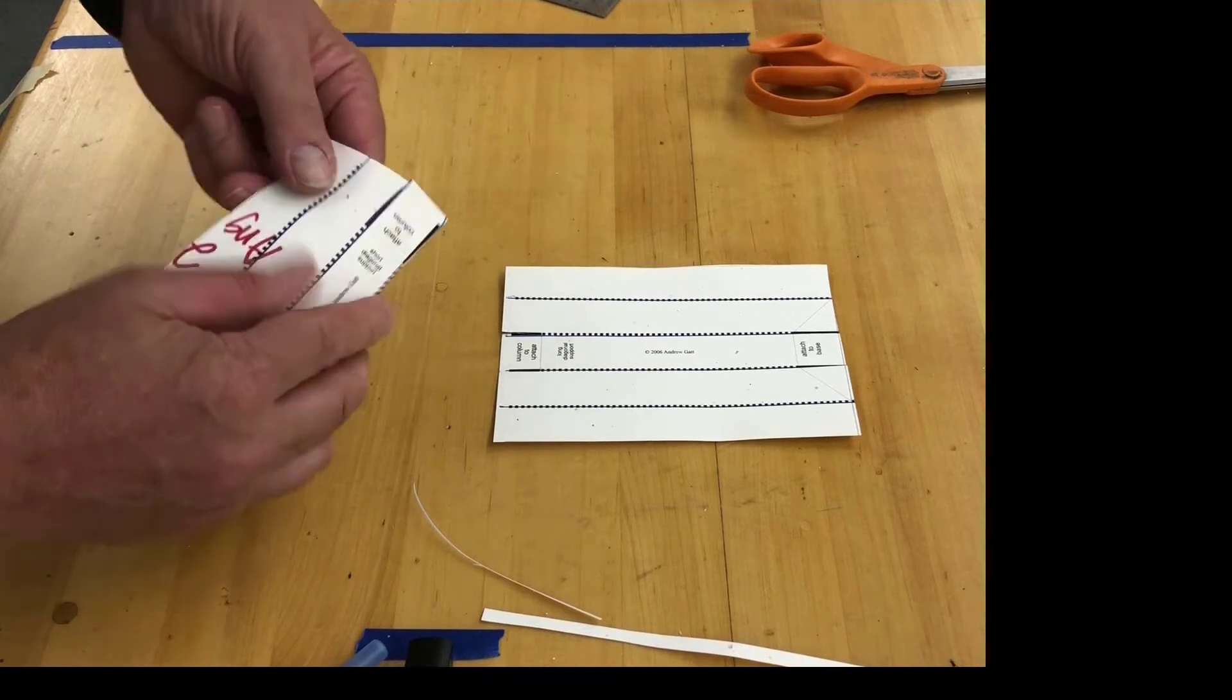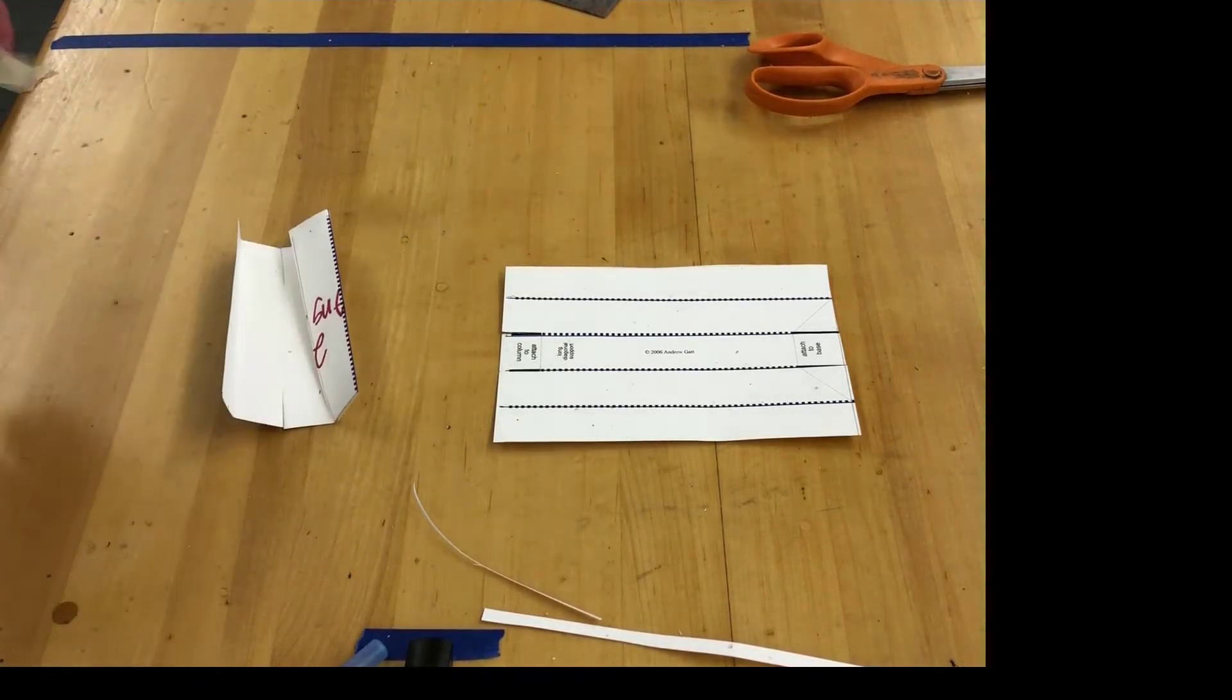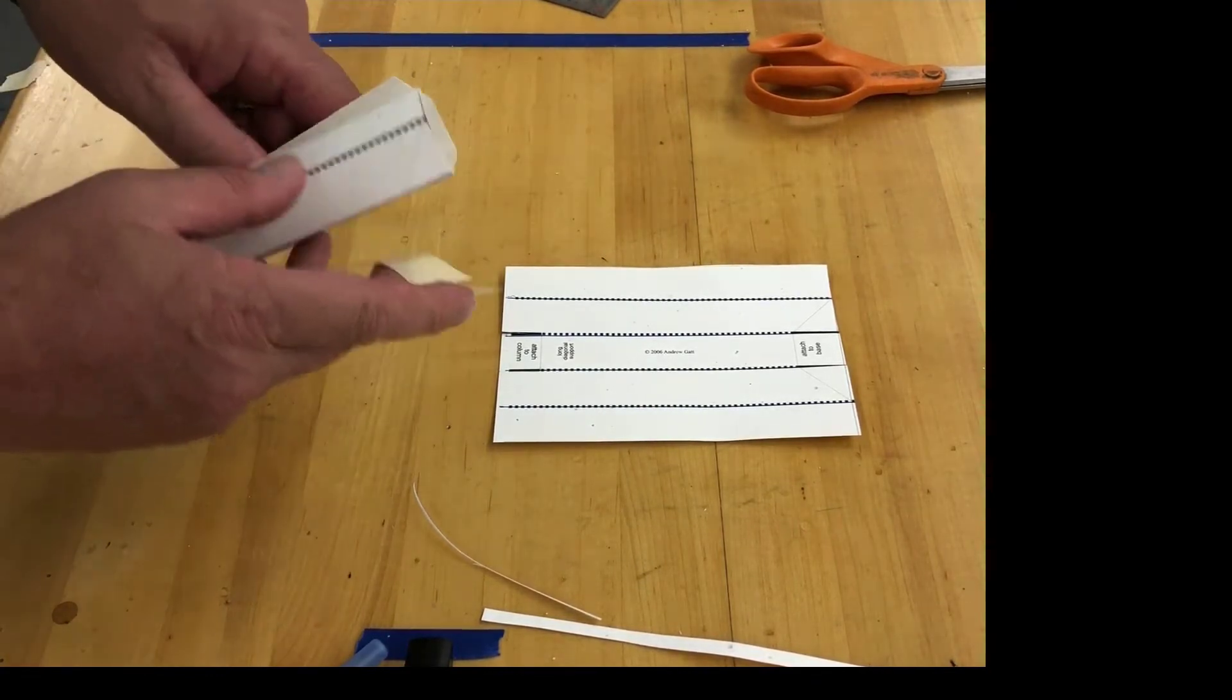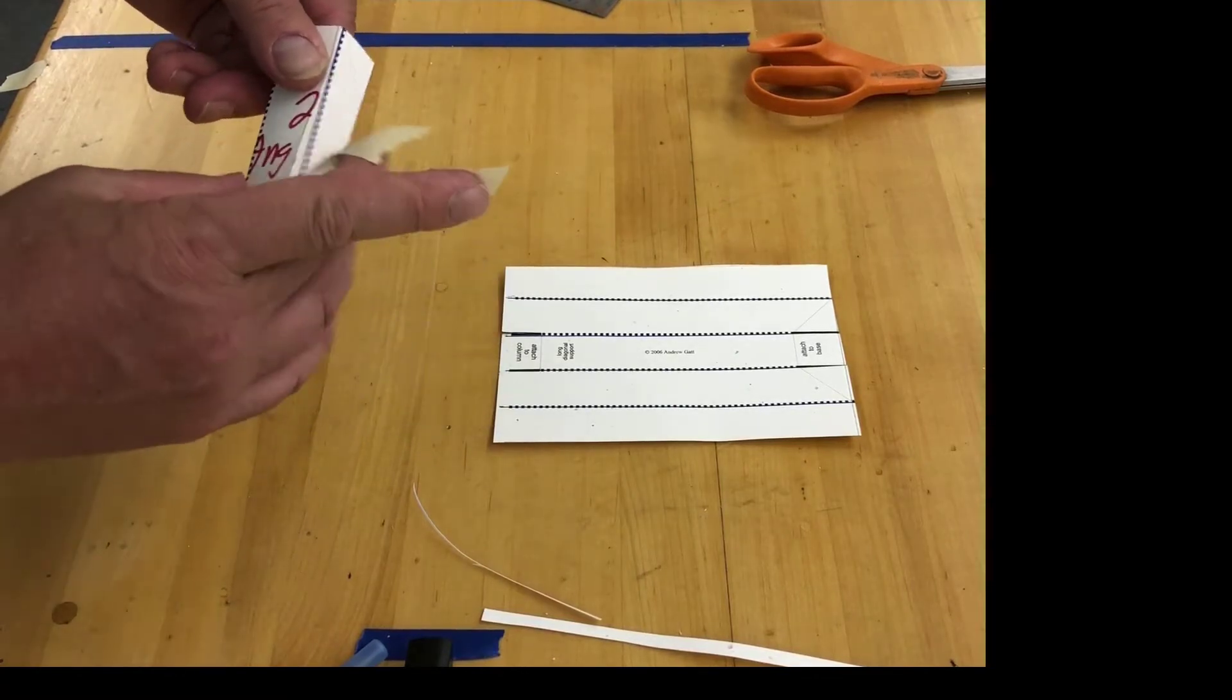We're gonna fold them like we did in a column. They're shorter, they fold pretty easily. And we're gonna take two pieces of tape on each one.